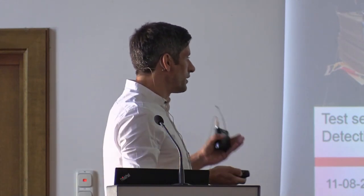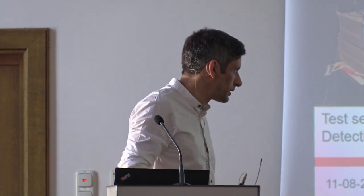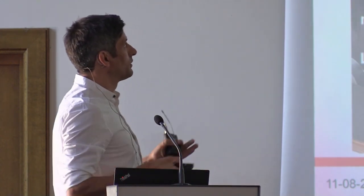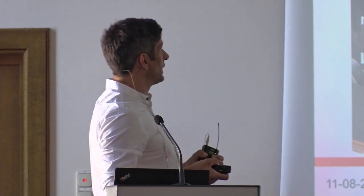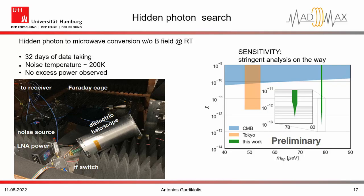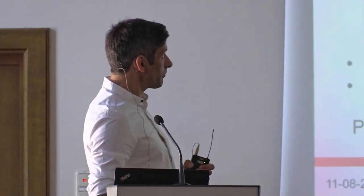This setup was also used for fake axion injection in the preamplifier, and a signal of 10⁻² watts could be detected within a few days. We conducted a hidden photon search using 32 days of data taking with a noise temperature of 200 Kelvin, and we observed no excess power. We were able to produce a preliminary sensitivity plot — still under investigation as we check uncertainties and the power boost factor — showing the sensitivity we can reach in the hidden photon phase space close to 78 microelectronvolts.